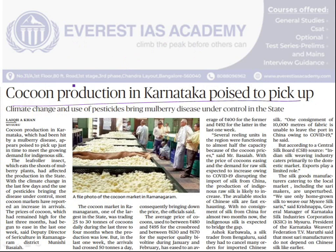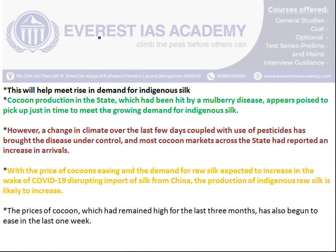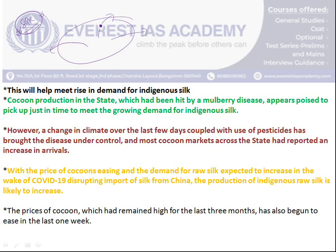The next article is: cocoon production in Karnataka poised to pick up. Karnataka is one of India's leading producers of silk. Globally, China is the leading silk producer. Before the novel coronavirus impact, China dominated international silk trade, exporting to most countries worldwide. However, due to the coronavirus impact in Wuhan and Hubei province, factories have shut down, land borders have been frozen, and travel restrictions imposed. China's silk exports have fallen sharply, leaving a vacuum in the international arena that India is looking to fill.